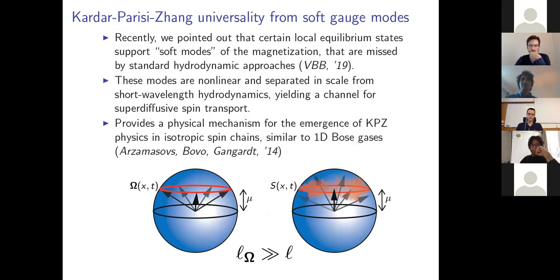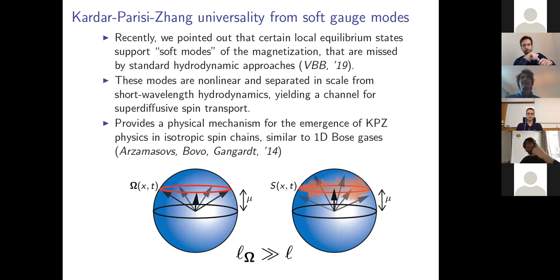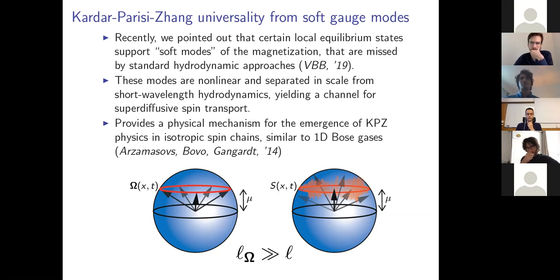We recently proposed an explanation based on what you can think of as Goldstone modes of GHD — soft modes of the magnetization that arise in certain local equilibrium states and are missed by standard hydrodynamic approaches. A naive application of non-linear fluctuating hydrodynamics, as detailed in the review by Spohn, predicts simply diffusive spreading. Similarly, a naive application of GHD with a short-wavelength cutoff also predicts purely diffusive spreading. So there seems to be some ingredient missing from these standard theories.